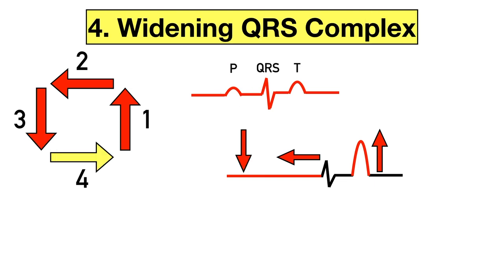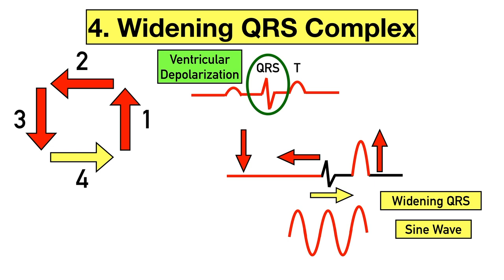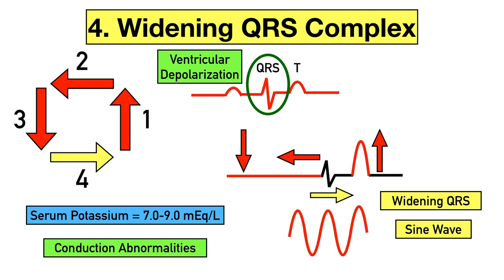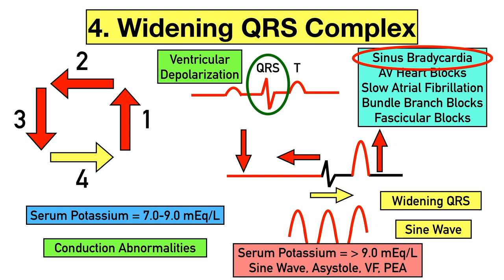Finally, the arrow pointing to the right: as potassium levels become more elevated, the QRS complex may start to widen. Think of grabbing each end of the EKG tracing and pulling it to stretch it out — widening the QRS complexes and eventually creating a sine wave pattern. At potassium levels of about 7.0 to 9.0, conduction abnormalities may be present, including sinus bradycardia, AV heart blocks, slow atrial fibrillation, bundle branch blocks, or fascicular blocks. Potassium levels above 9.0 can lead to life-threatening arrhythmias such as sine wave patterns, asystole, ventricular fibrillation, or PEA.